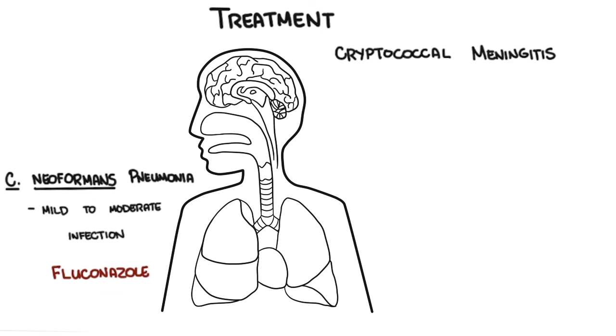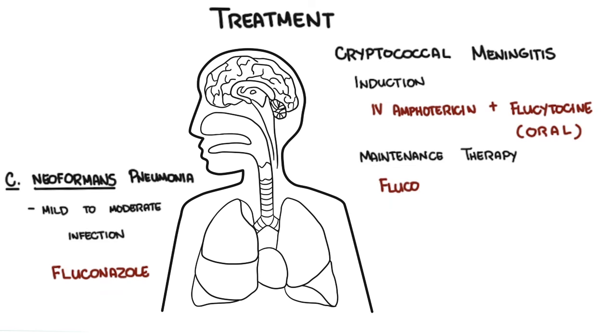With cryptococcus meningitis, which is quite serious because of the risk of increased intracranial pressure, induction with IV amphotericin B plus flucytosine which is an oral antifungal is important, and this is followed by maintenance therapy such as oral fluconazole until symptoms resolve.